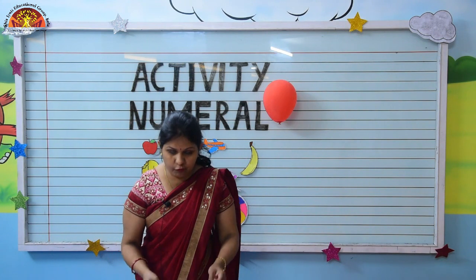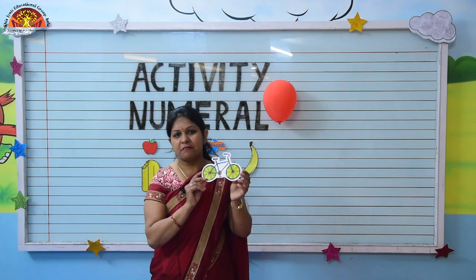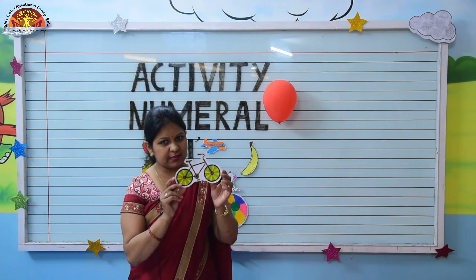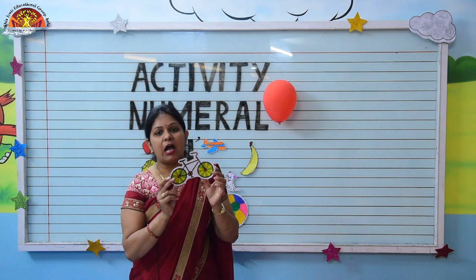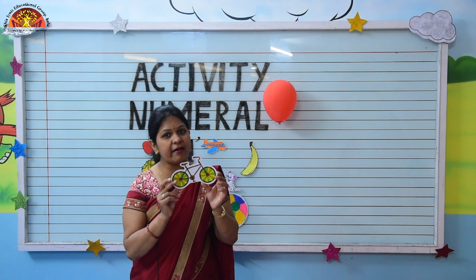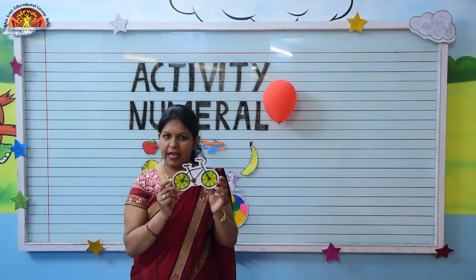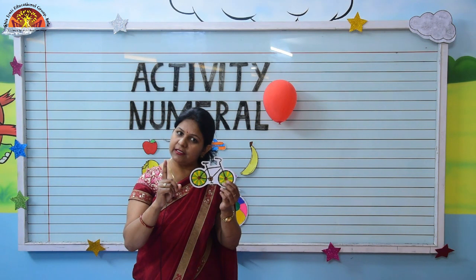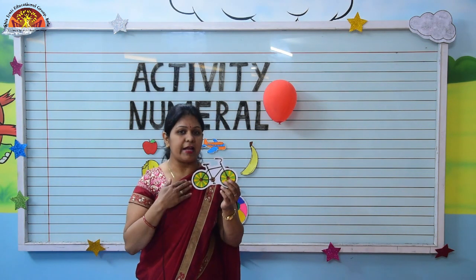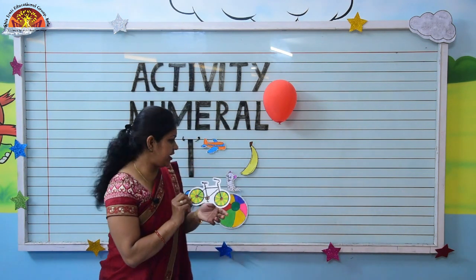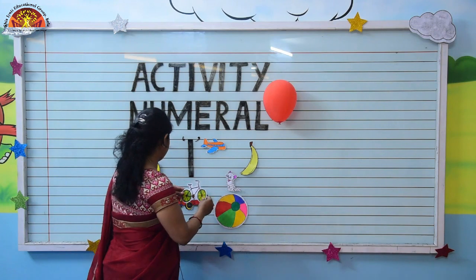Very good, kids. Now, what is this? This is a bicycle. How many bicycles do I have? I have one bicycle.